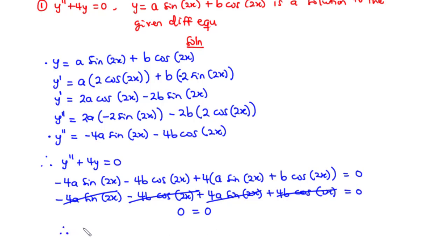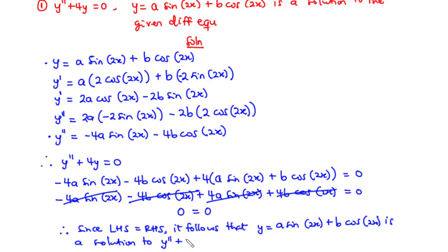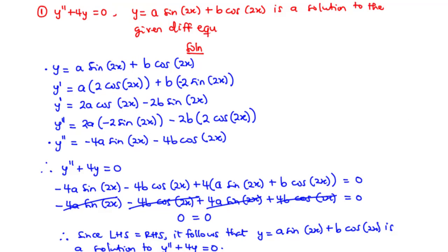Since the left-hand side equals the right-hand side, it follows that y = a·sin(2x) + b·cos(2x) is a solution to the differential equation y'' + 4y = 0. Now let's consider a few more examples.